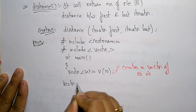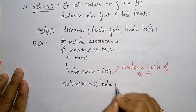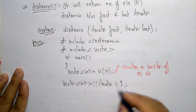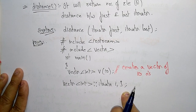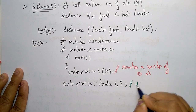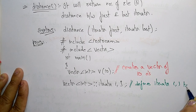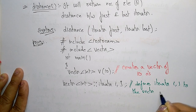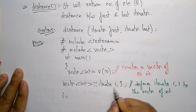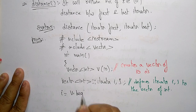Now, using vector int scope resolution operator, I am declaring two iterators i and j to the vector of integers. This is because I have to find the distance between the first iterator and the last iterator — i pointing to the first element and j to the last.